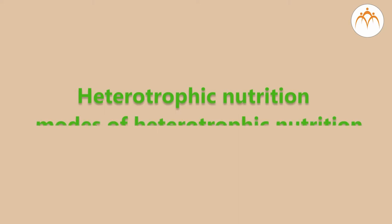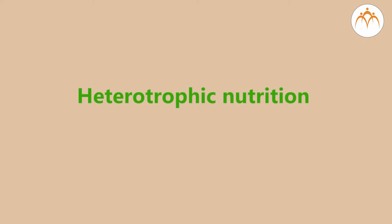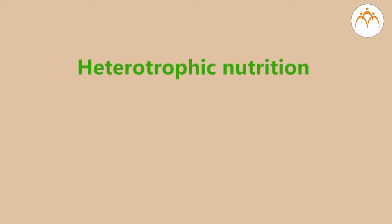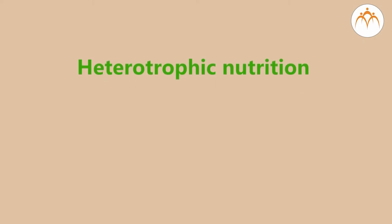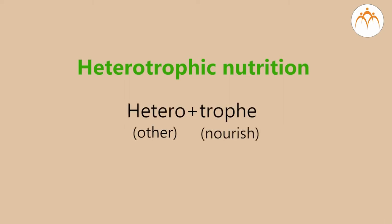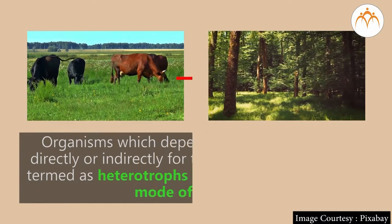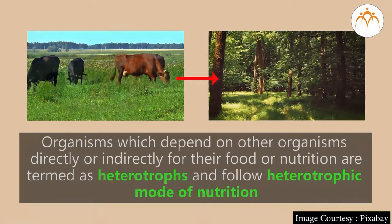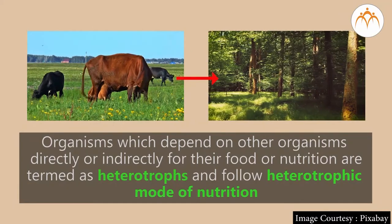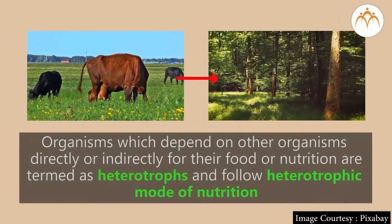In this session we are going to focus on understanding heterotrophic nutrition and various modes of heterotrophic nutrition. The word heterotrophic is a combination of two words: hetero plus trophic. Hetero means other and trophae means to nourish. Thus organisms which depend on other organisms directly or indirectly for their food or nutrition are termed as heterotrophs and follow heterotrophic mode of nutrition.